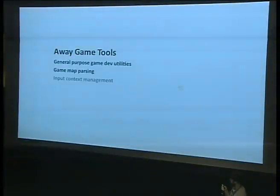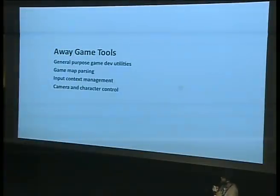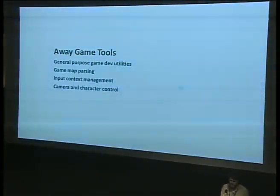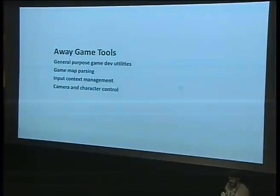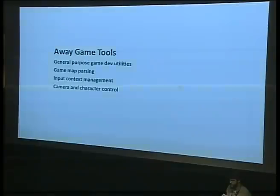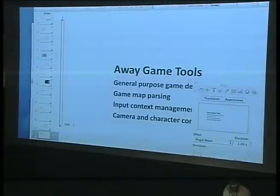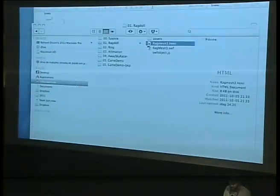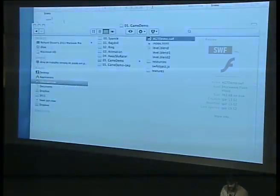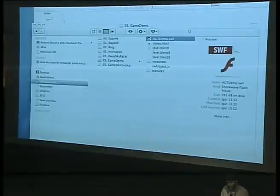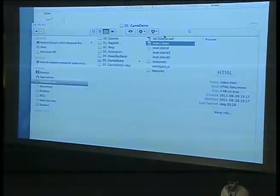Finally, there's Away Game Tools — a recent addition, a general-purpose suite of utilities for game development. Things like parsing game maps and input context management — mapping keys to certain actions — are common to all games. We're trying to simplify those common tasks so you can build your own engine on top of this. I'm going to show a little game demo using this. This is the one I built in 30 minutes — obviously the artwork wasn't built in 30 minutes, but all the code was.